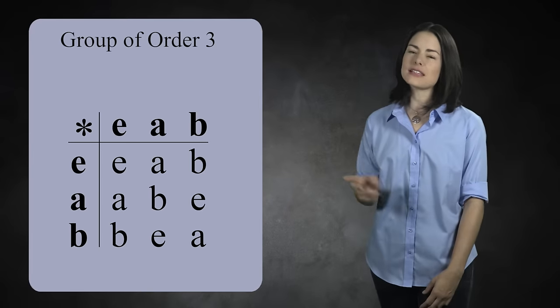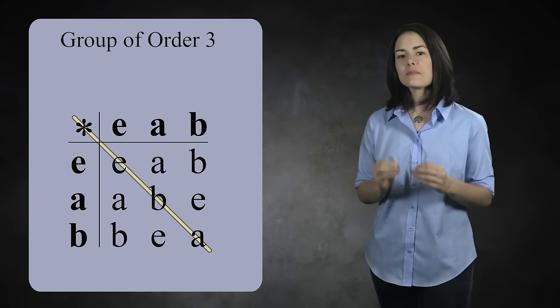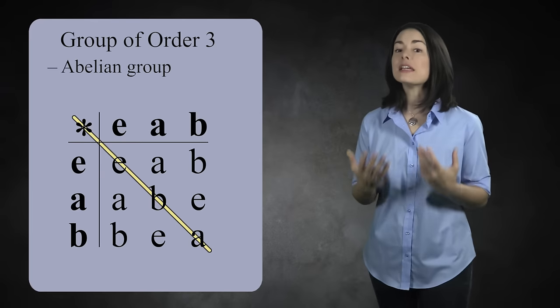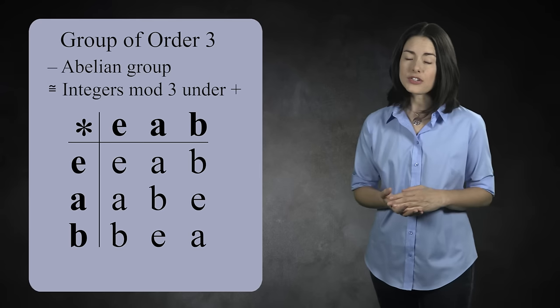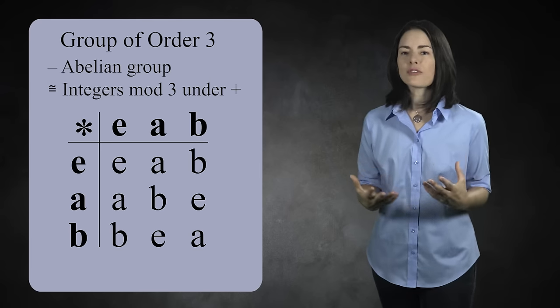So there is only one group of order 3, and this is its Cayley table. Because this table is symmetric about the diagonal, it's an abelian group. In fact, this group is identical to the integers mod 3 under addition. We say they are isomorphic groups.